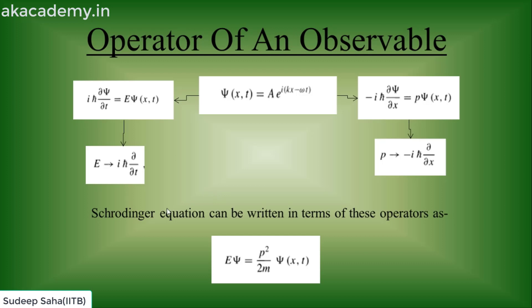The Schrödinger equation can be written in terms of these operators as E·ψ = p²/2m · ψ, where E and p are now operators. To get back the original Schrödinger equation, substitute E = i·h-bar ∂/∂t and p = −i·h-bar ∂/∂x, which returns the Schrödinger equation for a free particle.